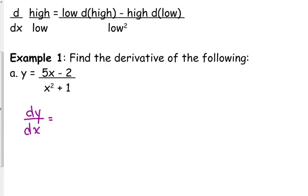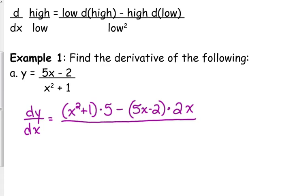Quotient rule says low, so x squared plus 1 times the derivative of high, low d high, bottom times the derivative of the top. The derivative of the top is just 5, minus high d low. The derivative of the bottom is 2x. And that's all over low squared, or the bottom squared.